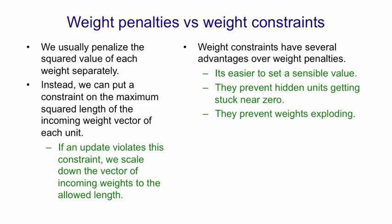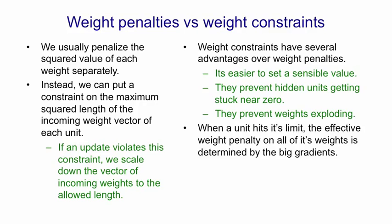Weight constraints also prevent the weights from exploding. One other subtle thing that weight constraints do is that when a unit hits its constraint the effective penalty on all of its weights is determined by the big gradients. So if some of the incoming weights have very big gradients they'll be trying to push the length of the incoming weight vector up and that will push down on all the other weights.